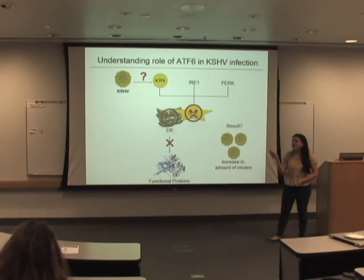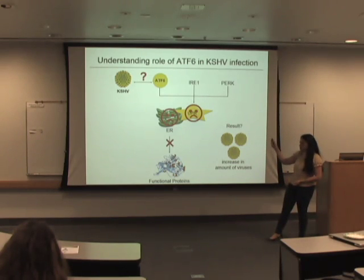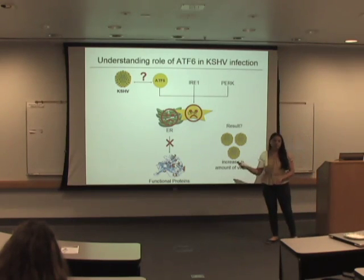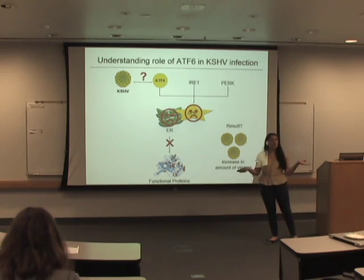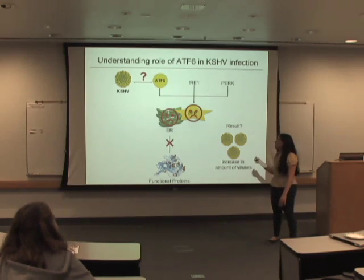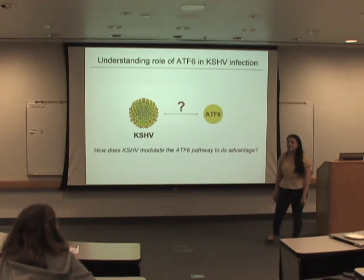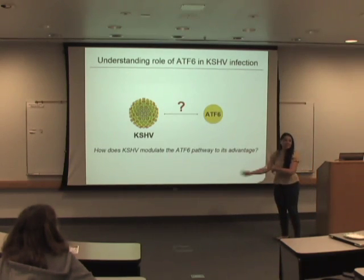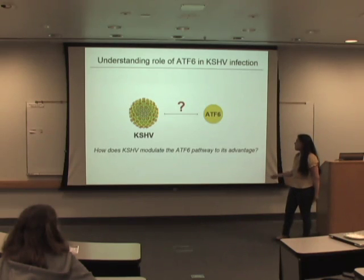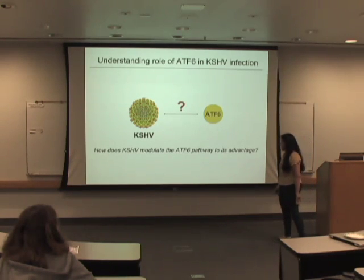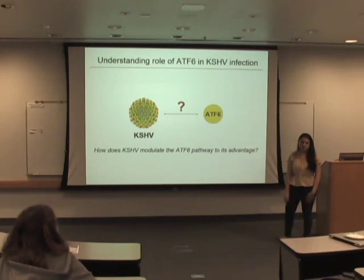But why? What's happening at this specific interaction level? This is unknown in the scientific realm, and that is my specific goal. My question is: how does KSHV modulate the ATF6 pathway to its advantage?